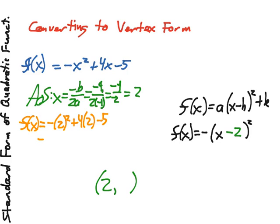Evaluating this, we get the opposite of 4 plus 4 times 2 is 8 minus 5. Negative 4 plus 8 is 4 minus 5 is negative 1. So we get 2, negative 1 as the location of our vertex.